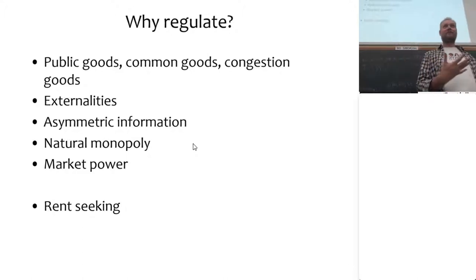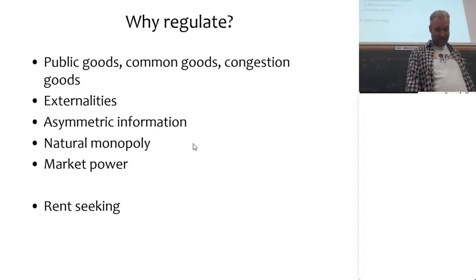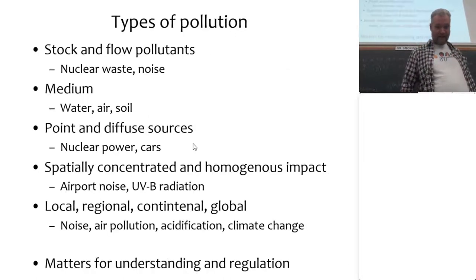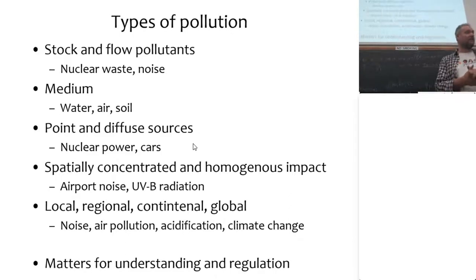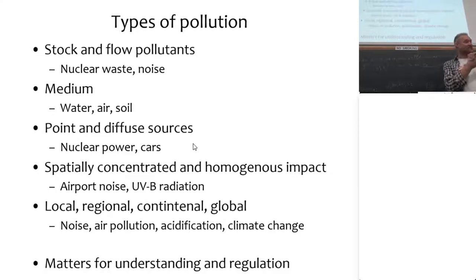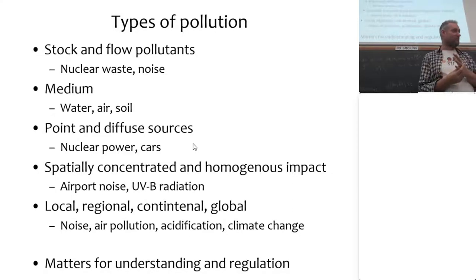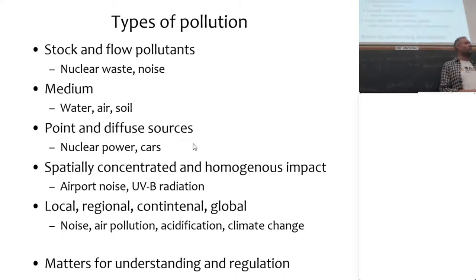Besides answering the question of why regulate — for the environment the answer is simple: there are externalities, so you need to step in — you also need to wonder what is actually the nature of the thing we are trying to regulate. What is actually the problem? You need to make a distinction between types of pollutants: are they stock or are they flow pollutants?